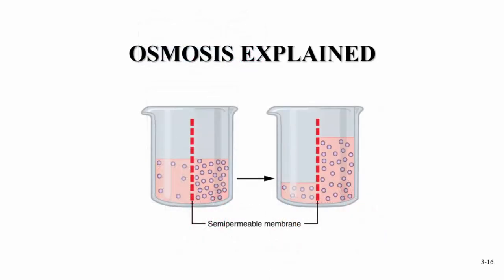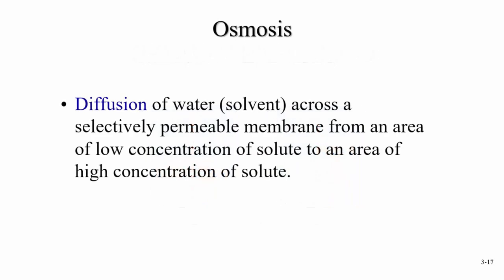Now we're going to look at osmosis. A lot of students have a problem understanding this concept, but if you're going into healthcare it's very important — osmosis affects body tissues, blood, and how the kidneys filter. Osmosis is the diffusion of water, the universal solvent, across a selectively permeable membrane from an area of low concentration of solute to an area of high concentration of solute.